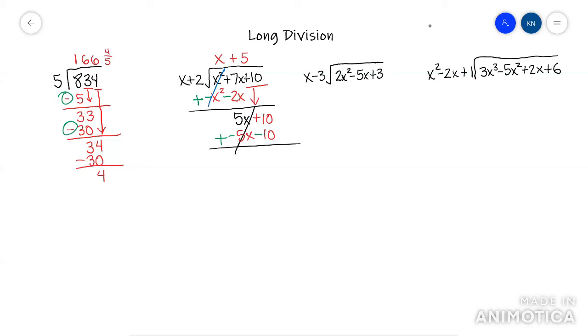This first term cancels. And it just so happens that 10 minus 10 is 0. So this one has 0 remainder. So X plus 5 is my answer.